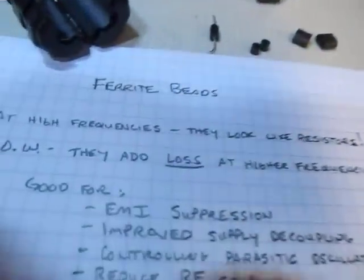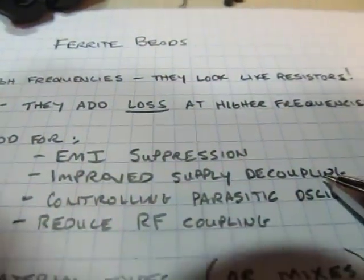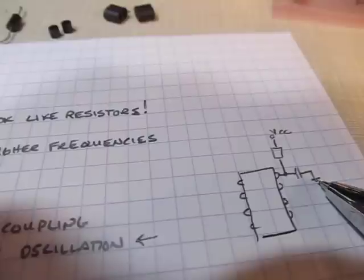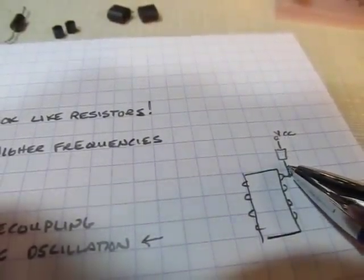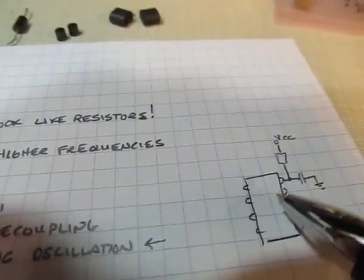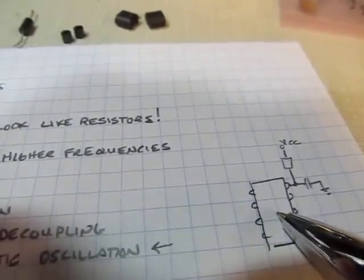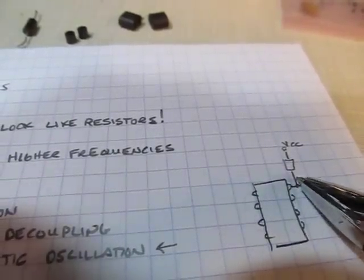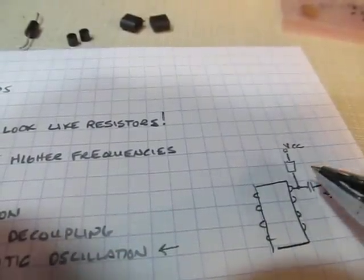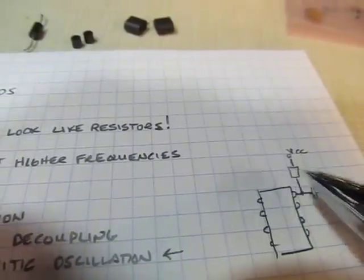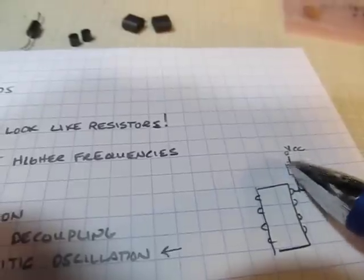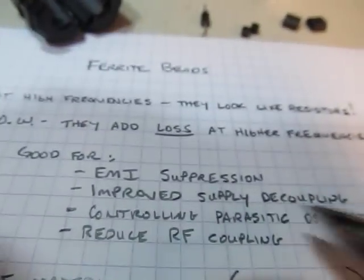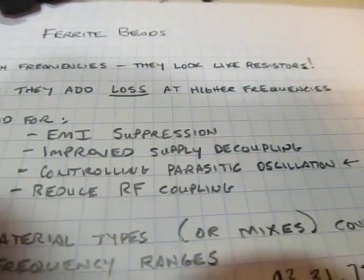That's a very common use case — EMI suppression. Another good use case is improved power supply decoupling. Here's a schematic example: I've got an IC with some local decoupling, and a ferrite bead in series with the power supply coming in. This does two things: first, if the chip generates high frequency energy that wants to leak out the power supply, the decoupling cap can short it to ground; and the ferrite bead prevents it from propagating onto the power supply plane. It also blocks higher frequency energy from coming in through the supply.